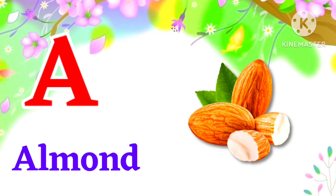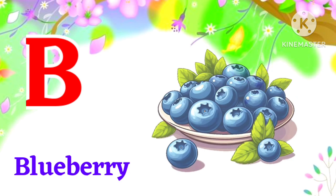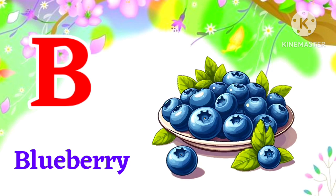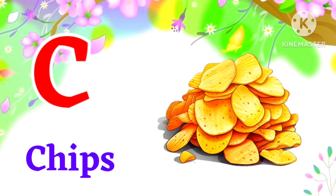A for almond. Almond means badam. B for blueberry. Blueberry means blueberry. C for chips. Chips means chips.